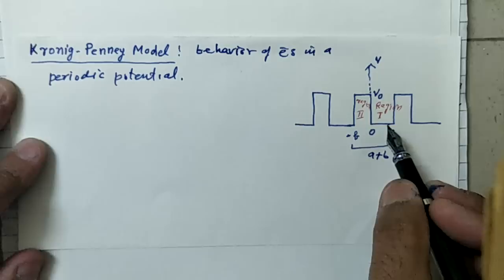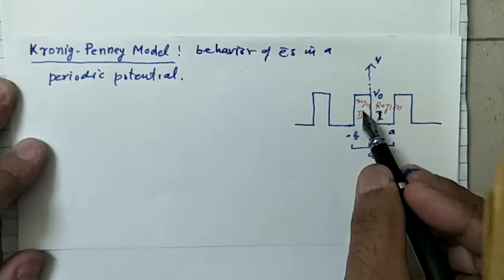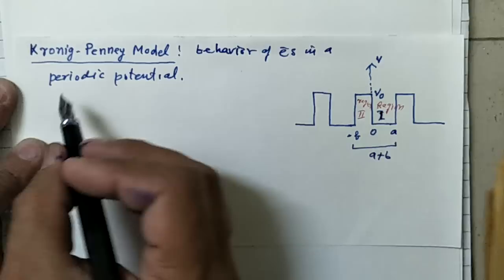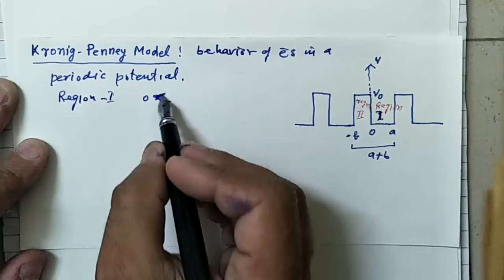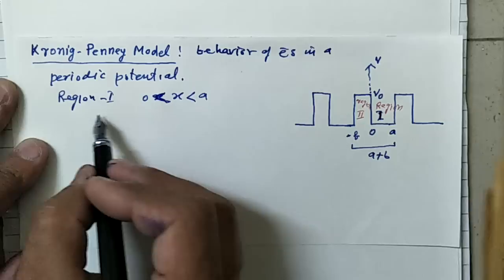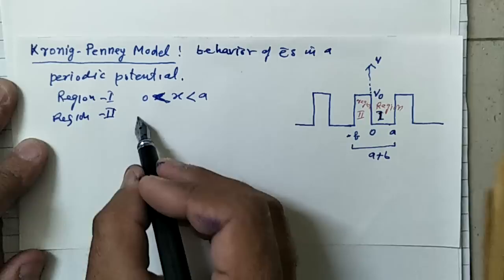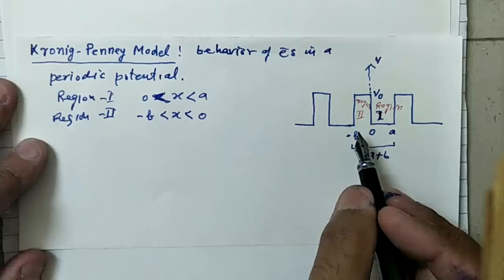In this periodic potential we will consider two regions. Region one lies between 0 and x less than a, that is from 0 to a. Region two is defined between minus b and 0, where x lies between 0 and b.